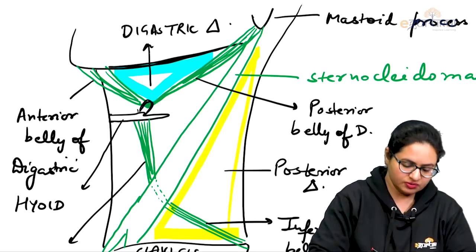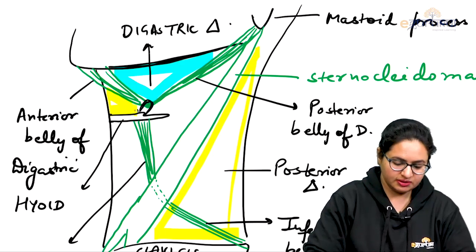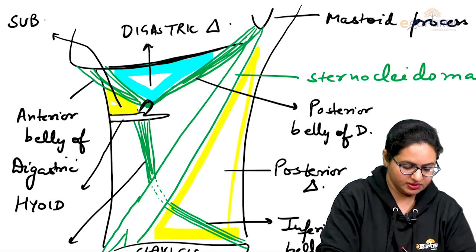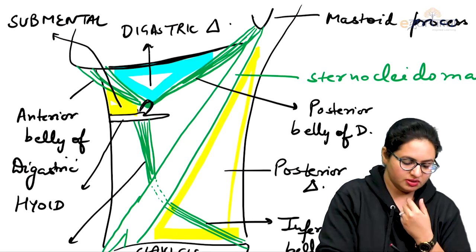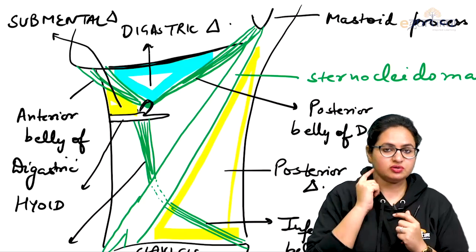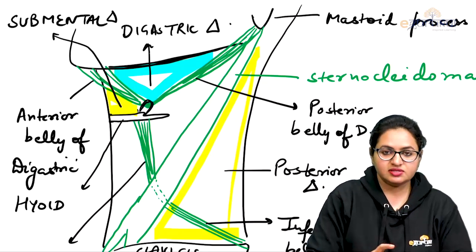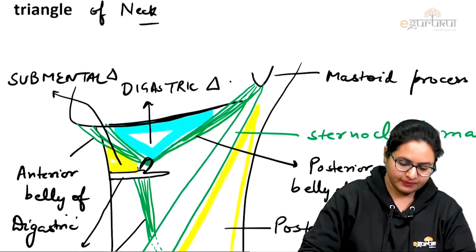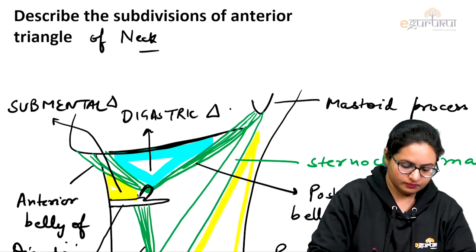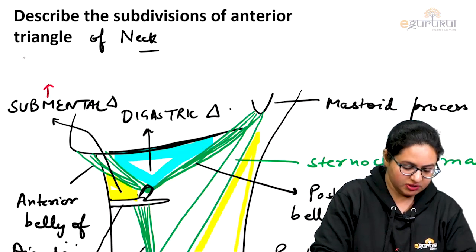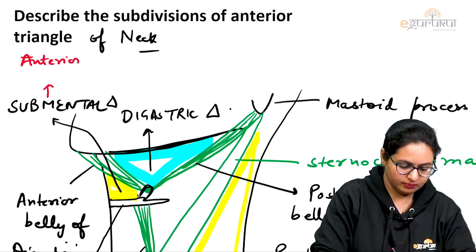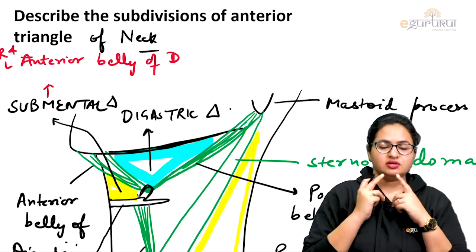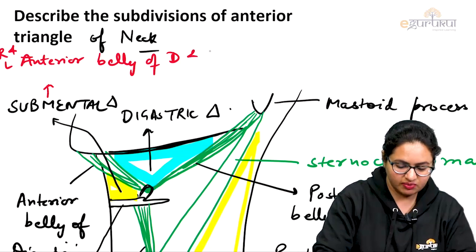There is another triangle present here — this is the submental triangle, named because it is just present below the chin. It is a half triangle visible on the lateral side, with the other half on the opposite side. It is formed between the two anterior bellies of digastric, and the base is formed by the hyoid bone. So for the submental triangle, it lies between the right and left anterior bellies of digastric, with the base formed by the hyoid bone.